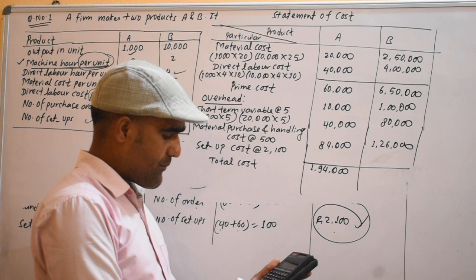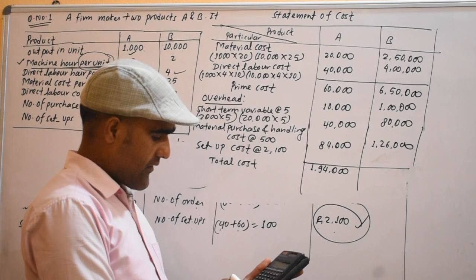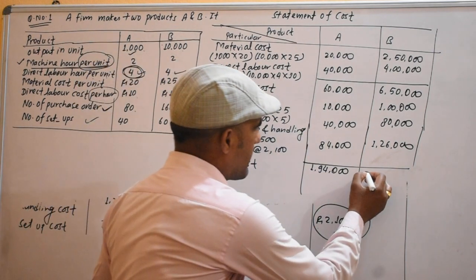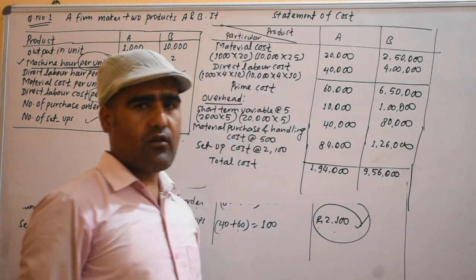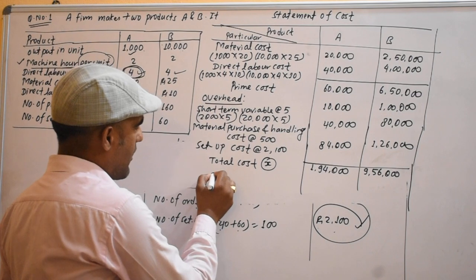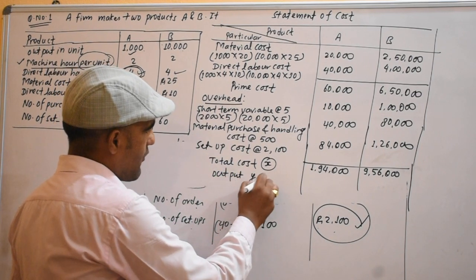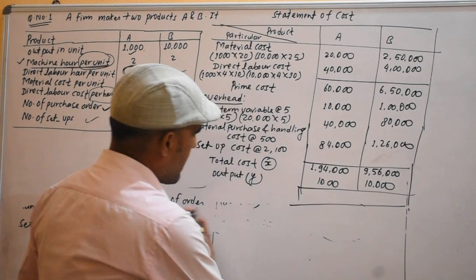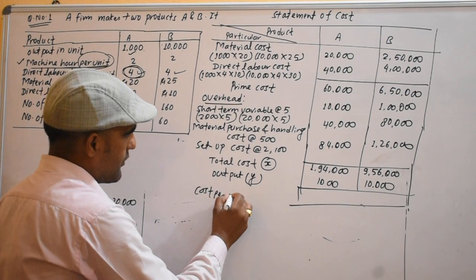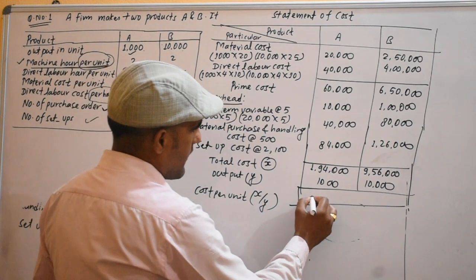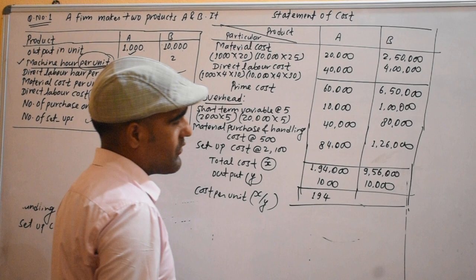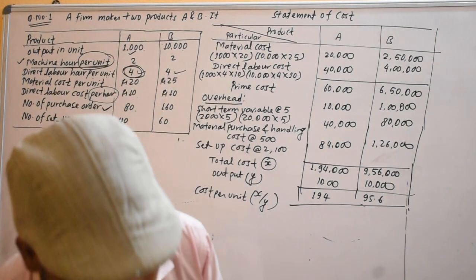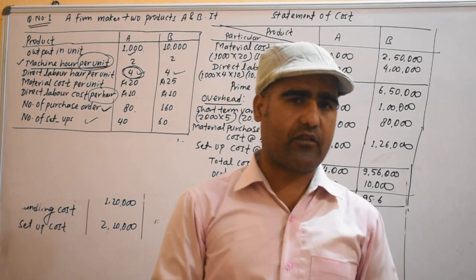The total cost for product A is $650,000 plus other overhead items, summing to approximately $956,000. Total output for A is 1,000 units and for B is 10,000 units, giving cost per unit of approximately $194 and $95 respectively. That covers this part — we will continue in the next video. Please like, comment, subscribe, and enjoy the channel. See you on YouTube.